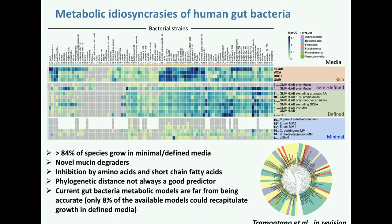This heat map summarizes almost four years of work. We see different bacterial species and strains versus different growth media — rich, semi-defined, defined, and even minimal media. The conclusion is that almost 85% of the species grow in minimal or defined media, and most species can grow in at least two different defined media. This was quite surprising for us, and we did a lot of follow-ups making sure we didn't have contamination or media carryover. We have reproduced these results many, many times.